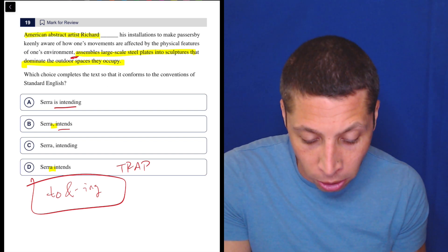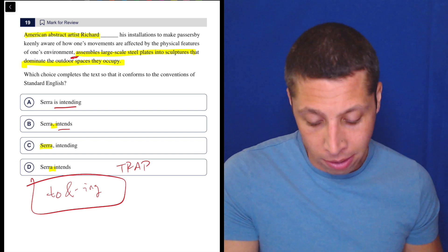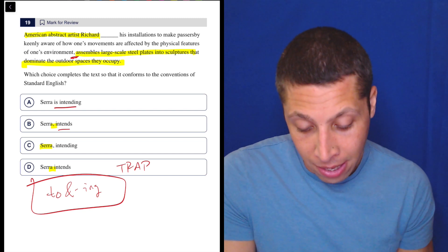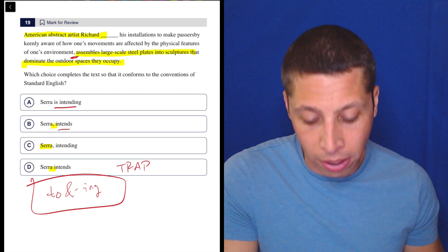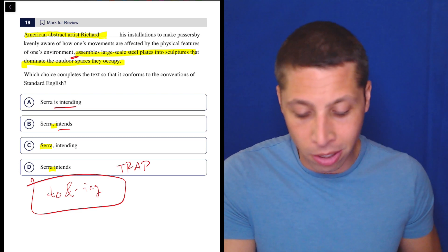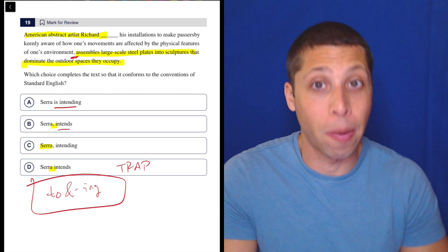So American abstract artist Richard Serra, that's my sentence. Assembles here. I'll read the whole thing. American abstract artist Richard Serra assembles large scale steel plates into sculptures that dominate the outdoor spaces they occupy. That's the sentence.